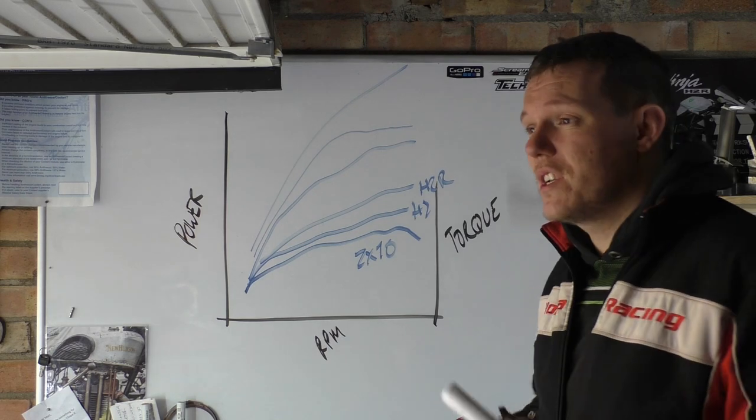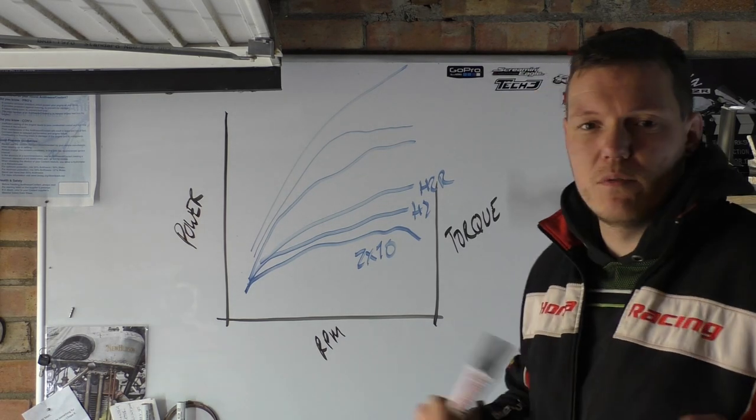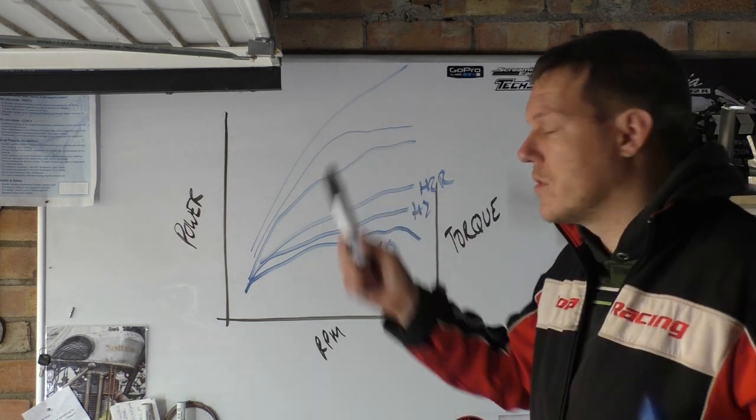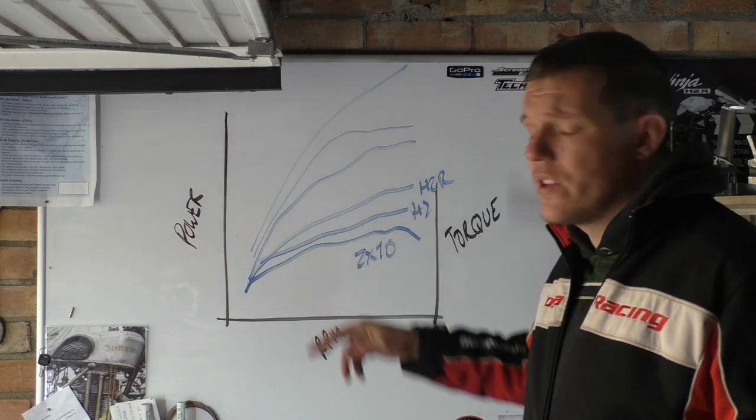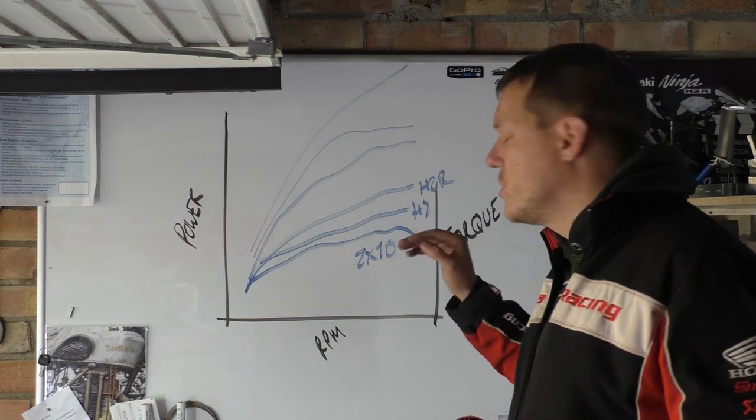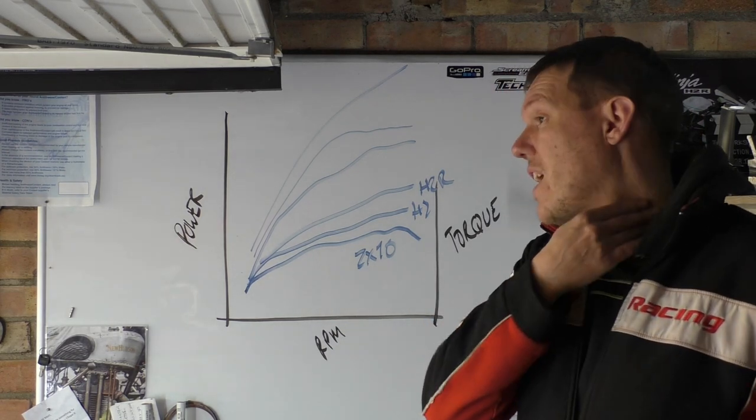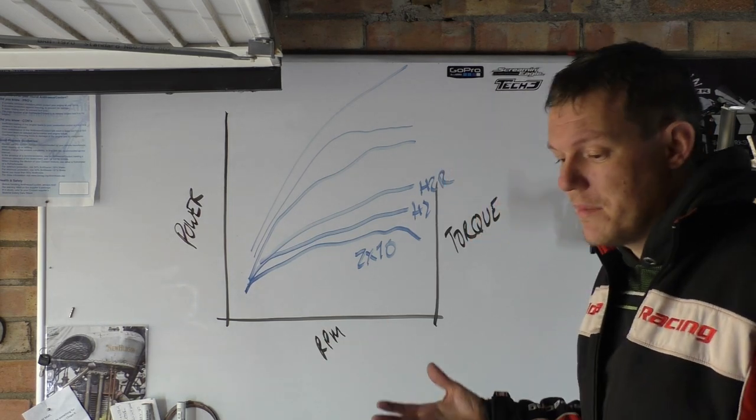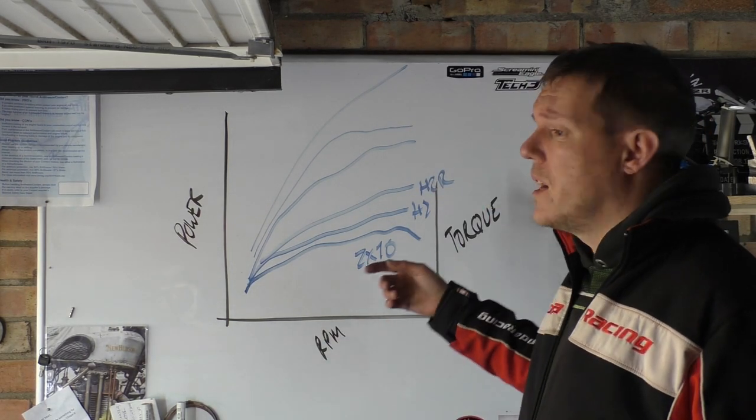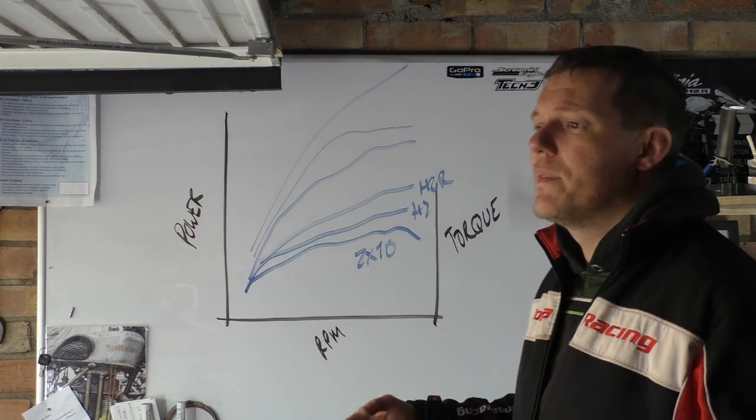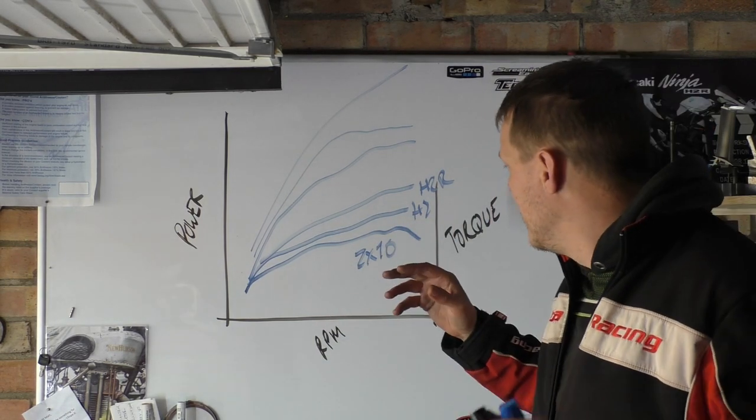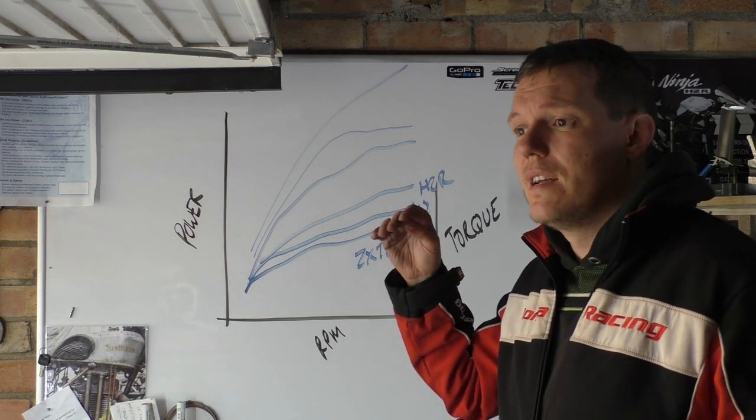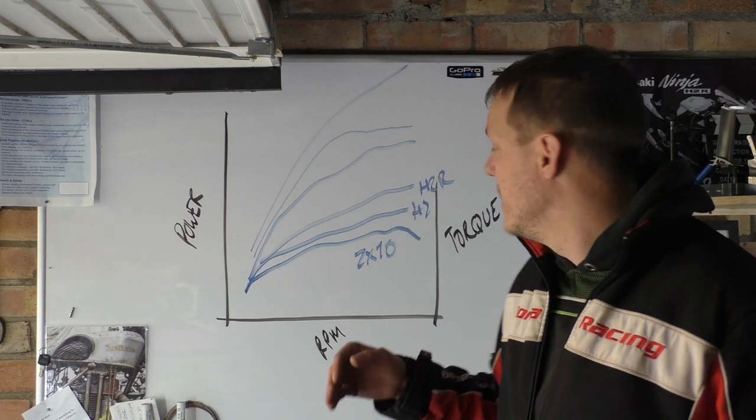I want to talk more about this, see if I can actually get some numbers from this in the future, find a source for the actual graphs. As you can see on the get-go, the H2 and the H2R both have higher power right from the start above the ZX10.